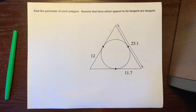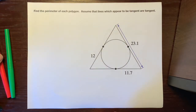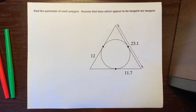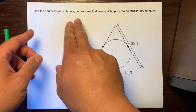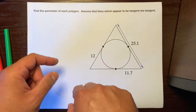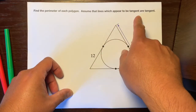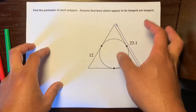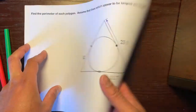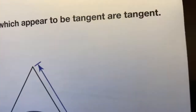Pay attention, get a calculator, get a pen or pencil, and we'll do this. Find the perimeter of each polygon, and assume that the lines which appear to be tangent are tangent.